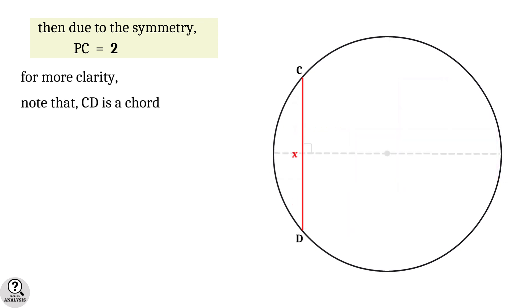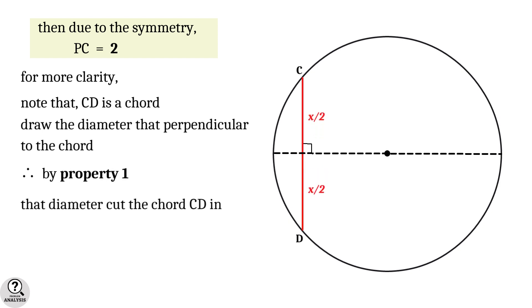To clear the context, note that CD is a chord. Draw the diameter that is perpendicular to the chord. Therefore, by property 1, that diameter will cut the chord into equal pieces, which means PC equals OD, which is equal to 2 units. Therefore, the section OC equals 4.